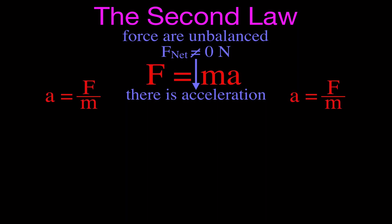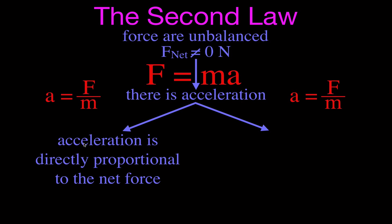We can talk about the relationship between the force applied to an object and its acceleration. Notice from this equation that the force is on the numerator — the top of the fraction — and the mass is on the denominator. That means the acceleration of the object is directly proportional to the net force — the sum of all forces acting on the object. When you increase the force on the object, you increase the acceleration. If you decrease the force, you get a lower acceleration.